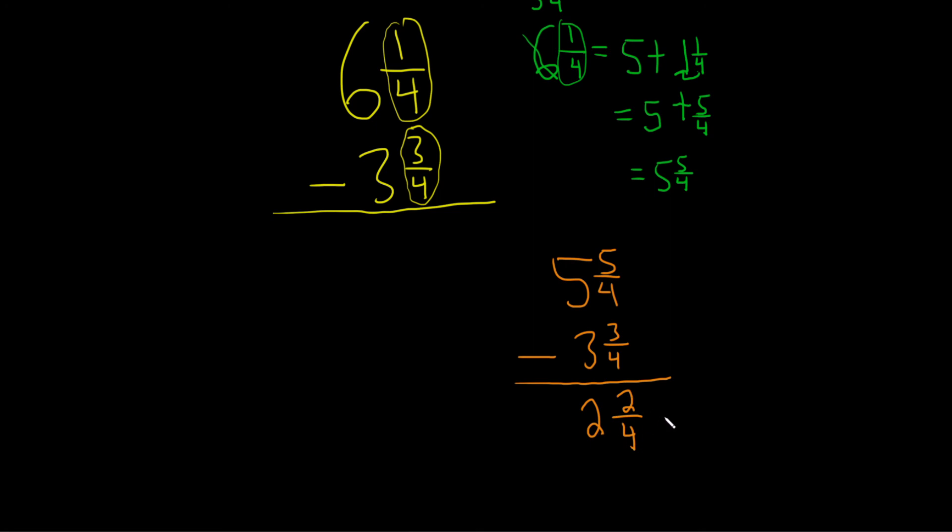And 2 over 4 can be simplified to 1 half. So this is 2 and 1 half. And so that would be the final answer.